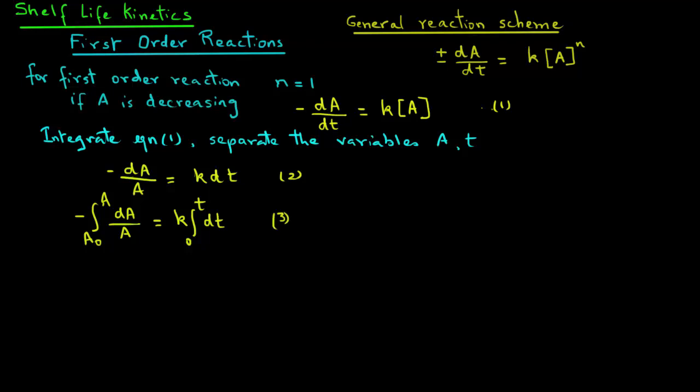Now note that the integral of dA over A is natural log of A. So for the left-hand side, we have minus natural log of A that is evaluated at A0, the initial concentration, to A, some final concentration at time t. And on the right-hand side, we have k, and the time is from initial time 0 to some final time t.